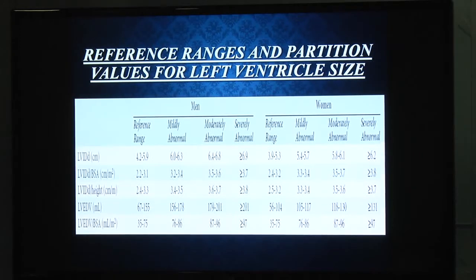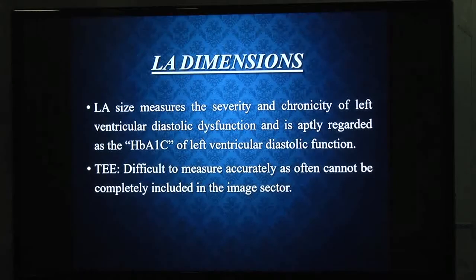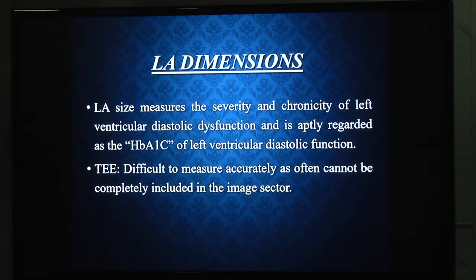Regarding reference ranges and partition values for left ventricular size: LVID greater than 6.9 cm in males is abnormal, and greater than 6.2 cm in females is considered severely abnormal. LA size measures the severity and chronicity of left ventricular diastolic dysfunction and is regarded as the HbA1c of ventricular diastolic function — it is a prognostic indicator. LA size measurement is increasingly recognized as important.